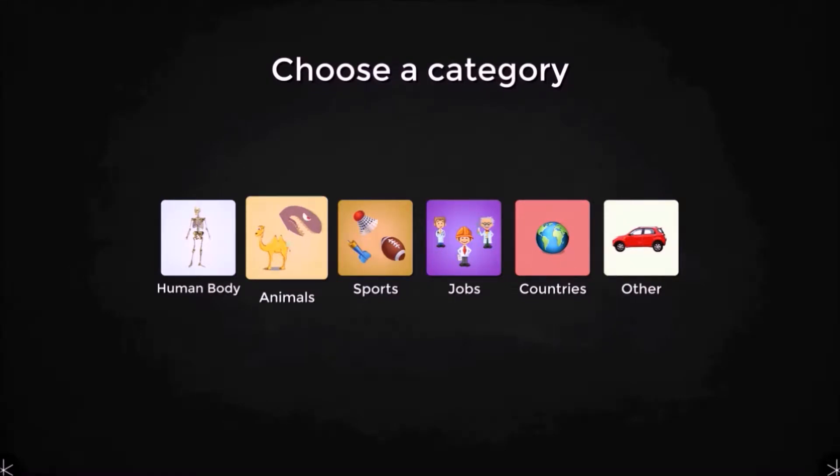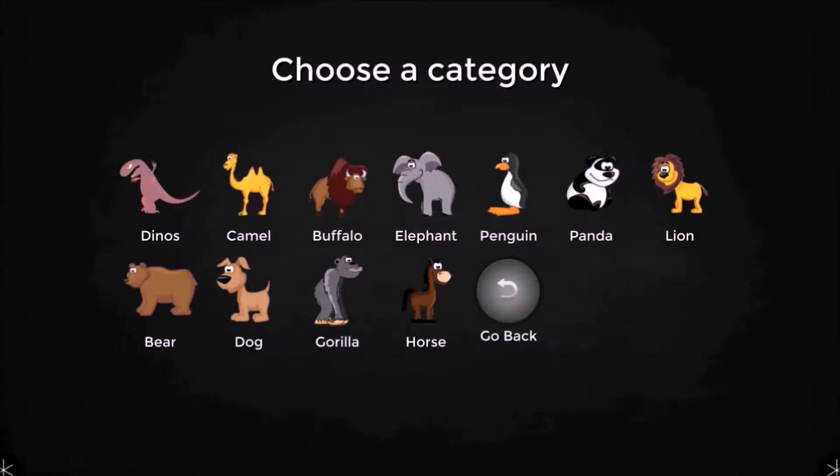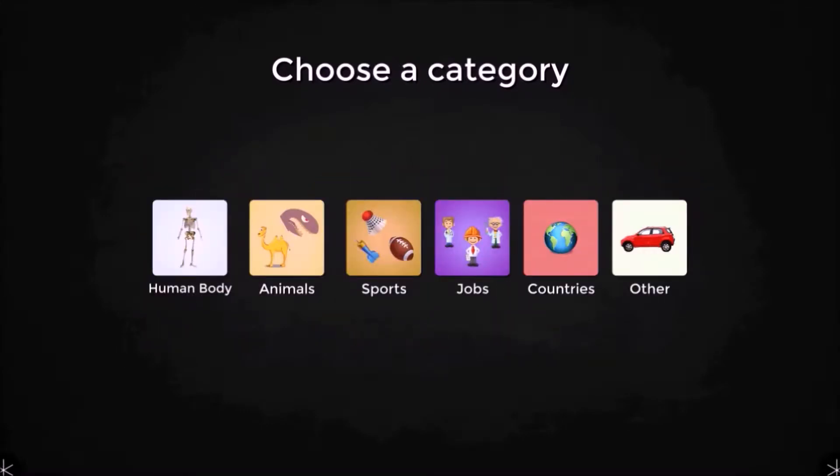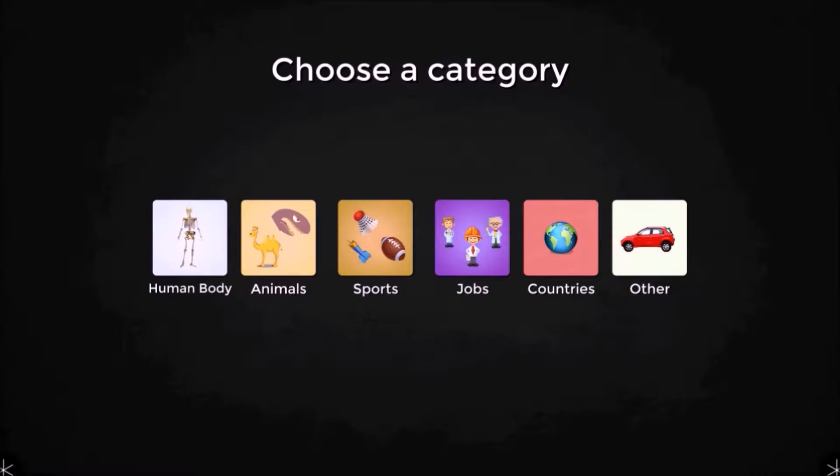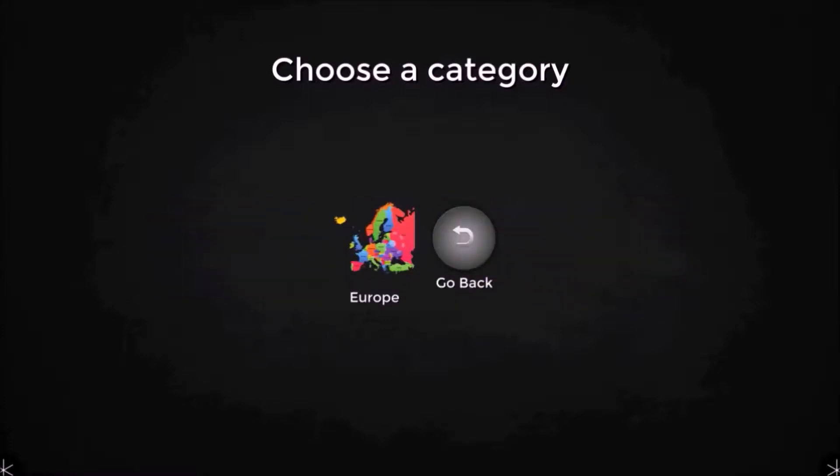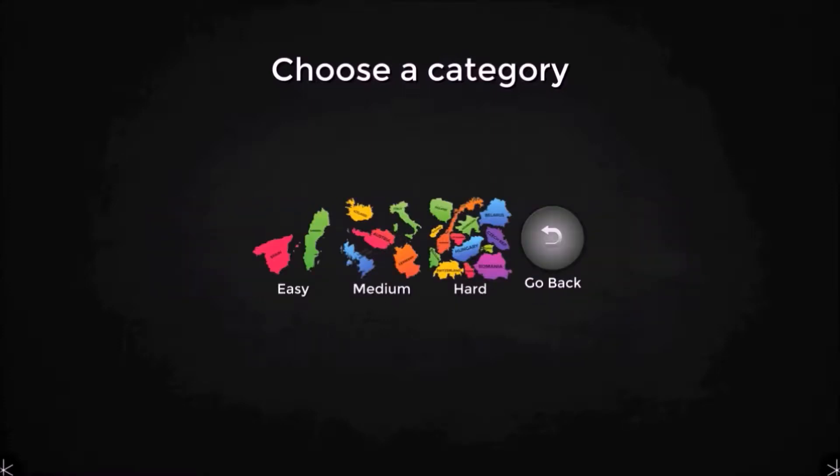Here are the animal puzzles. You can tap on the Go Back button to go back up one level in the Category menu. Here are the Sports category puzzles. Let's take a look at one of the puzzles under the Countries category. Here, you can choose the level of difficulty for the game.